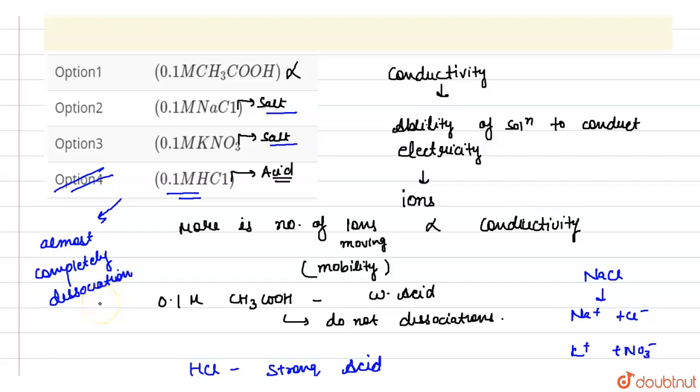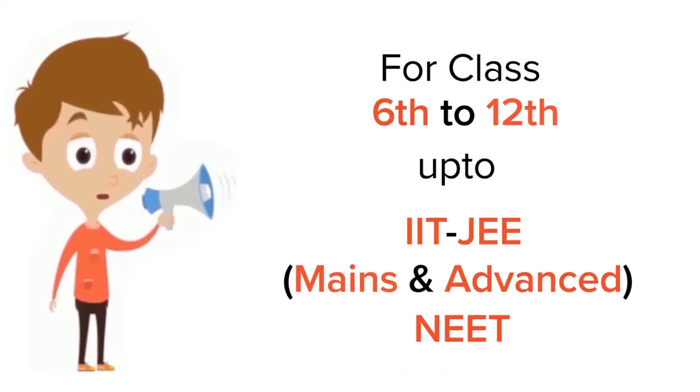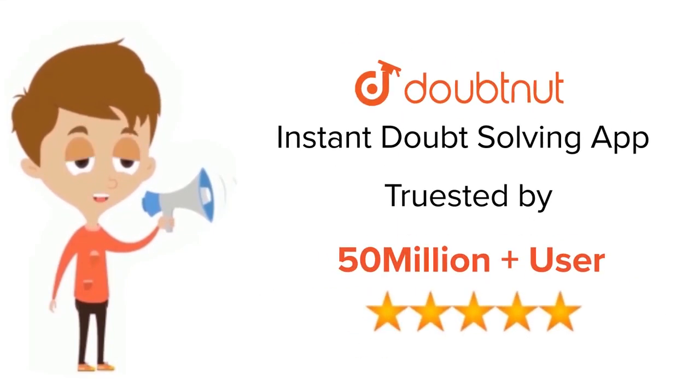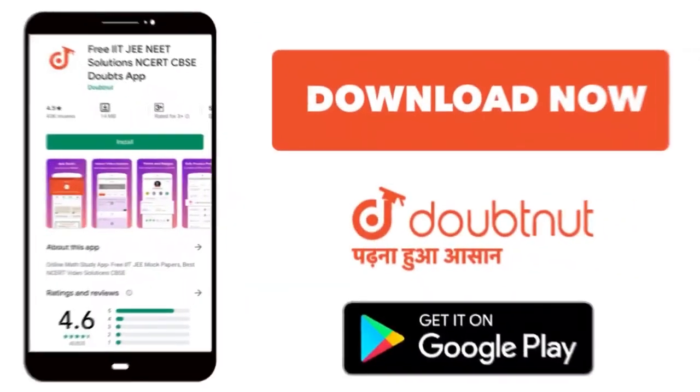So option number fourth is the correct answer. For class 6 to 12th, IIT-JEE and NEET level, trusted by more than 5 crore students, download DoubtNet app today.